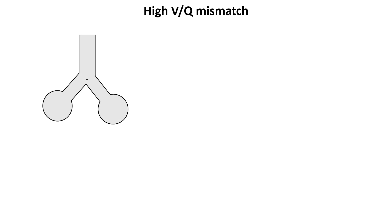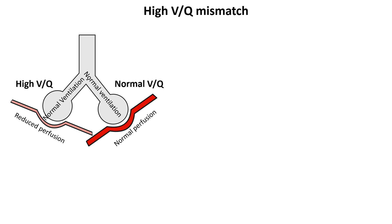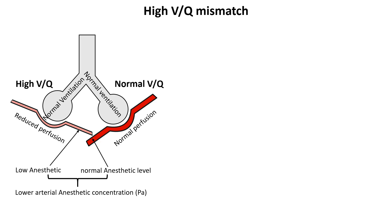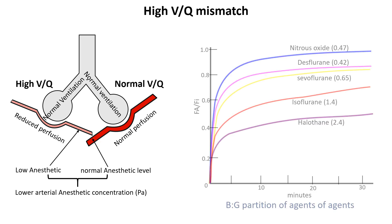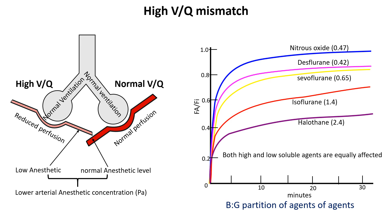When the V/Q ratio is high, the alveoli receive a lot of ventilation but not much blood is flowing past them. Even though these alveoli receive a high concentration of anesthetic gas, the low blood flow means less anesthetic is picked up and delivered to the arterial blood, so arterial concentration remains lower. In high V/Q regions, both highly soluble and less soluble anesthetics have reduced arterial concentrations because perfusion is the limiting factor. Less soluble agents are further restricted by low blood flow, while highly soluble agents lack sufficient perfusion to carry them away despite their ability to dissolve in blood.